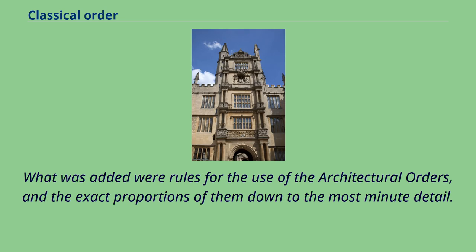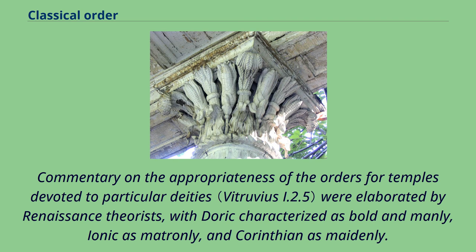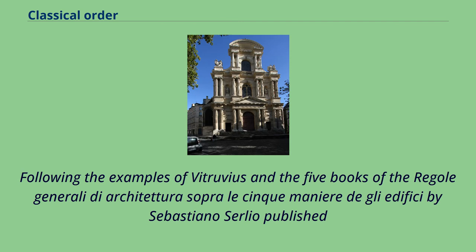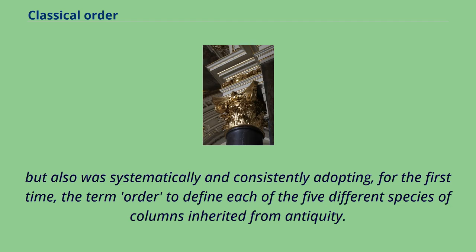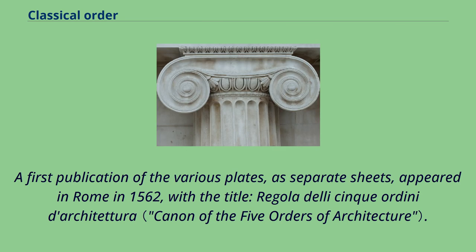What was added were rules for the use of the architectural orders and the exact proportions down to the most minute detail. Commentary on the appropriateness of the orders for temples devoted to particular deities were elaborated by Renaissance theorists, with Doric characterized as bold and manly, Ionic as matronly, and Corinthian as maidenly. Following Vitruvius and Sebastiano Serlio's five books published from 1537 onwards, Giacomo Barozzi da Vignola produced an architecture rule book that was more practical and consistently adopted, for the first time, the term 'order' to define each of the five different species of columns inherited from antiquity.